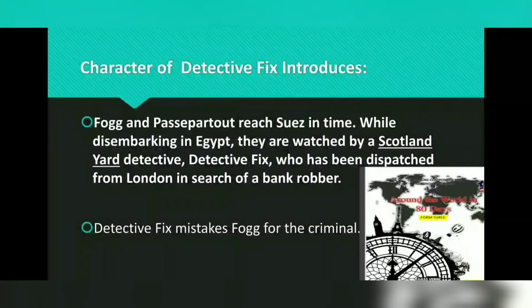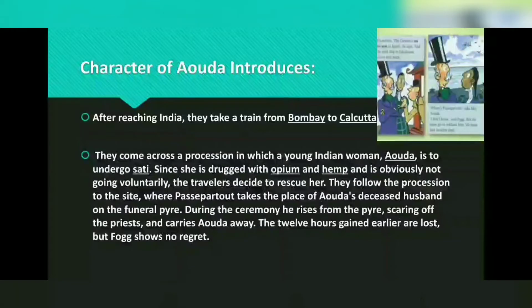Detective Fix has been dispatched from London in search of a bank robber. Detective Fix mistakes Fogg for the criminal. After reaching India, they take a train from Bombay to Calcutta.